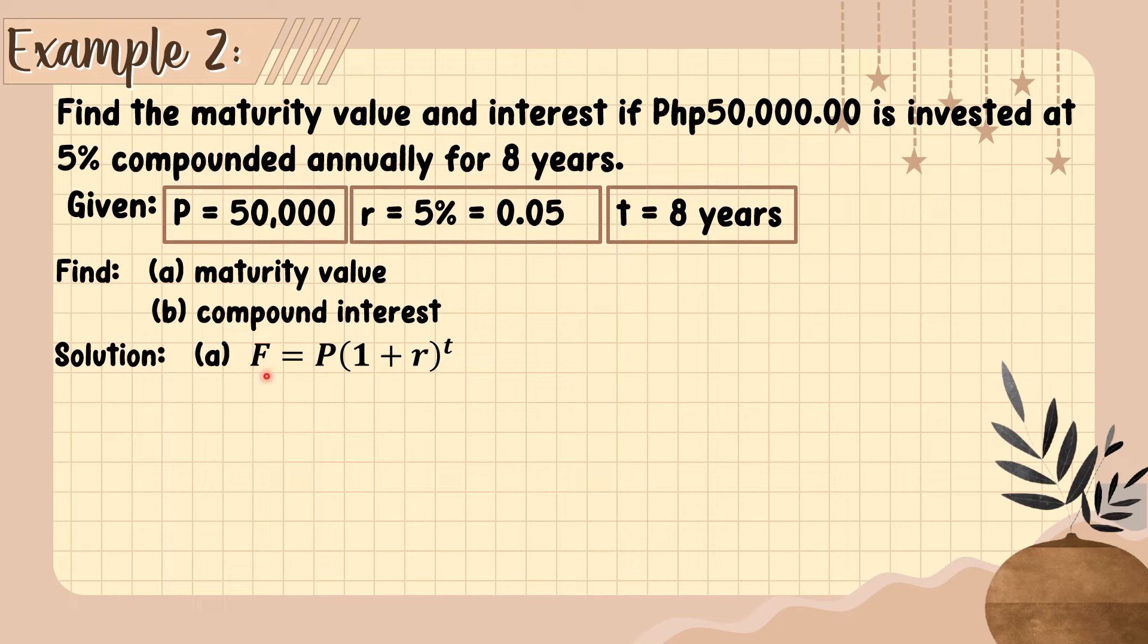First, let's find the maturity value by using the formula F equals P times the quantity 1 plus r raised to t. Substitute the principal 50,000, rate is 0.05, and time is 8. Let's add what's in the parentheses, that becomes 1.05.